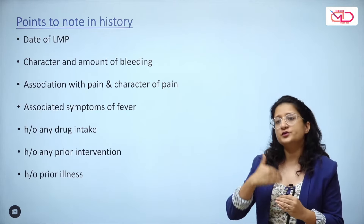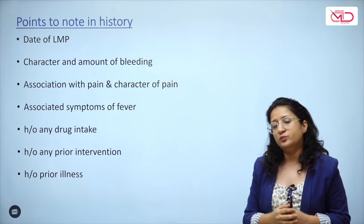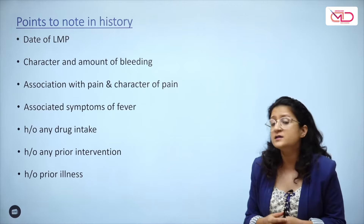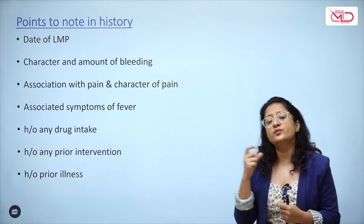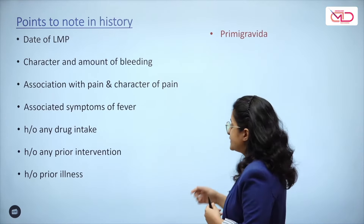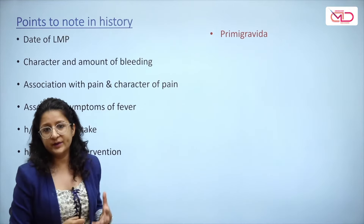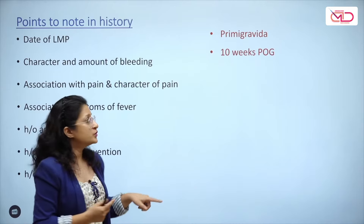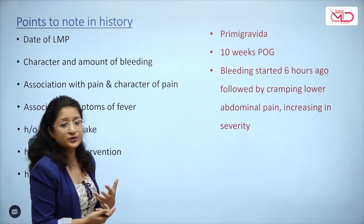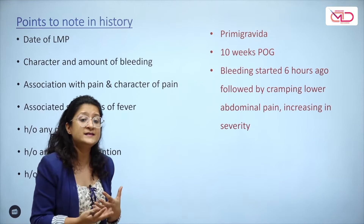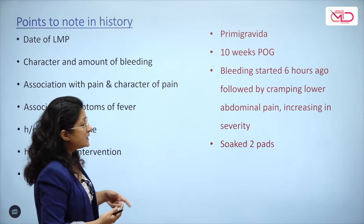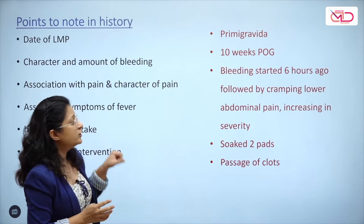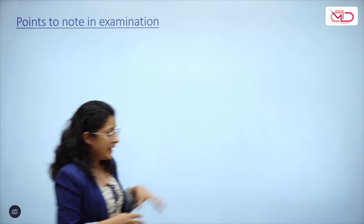In our particular case: she is a primigravida, period of gestation calculated at 10 weeks, urine pregnancy test positive. Bleeding started about six hours ago, followed by cramping lower abdominal pain that increased in severity as bleeding progressed. She soaked two pads over the last six hours — which is significant — and also gave a history of passage of clots.